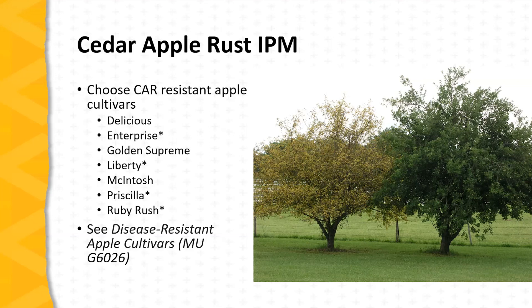The cultivars marked with asterisks are not only resistant to cedar apple rust but also to other apple diseases such as apple scab or fire blight — good choices for the home orchardist from the standpoint of simplifying disease management.